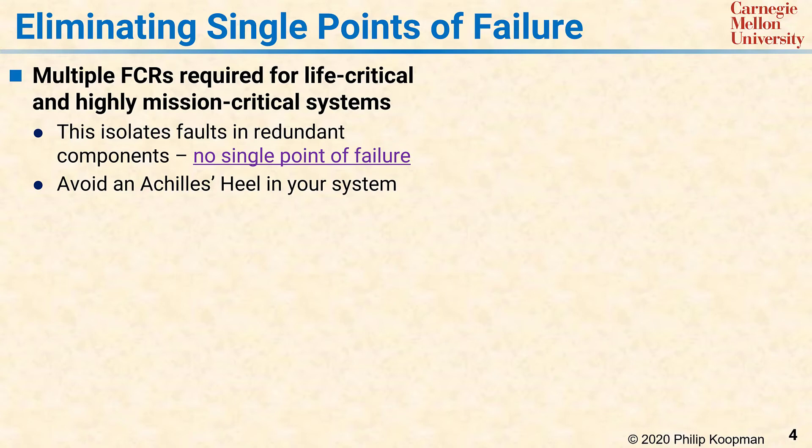It is important to realize that two copies of the same software running on two CPUs will protect against hardware failures, but can still, for practical purposes, be a single point of software failure because software bugs will affect both CPUs at the same time.